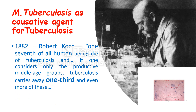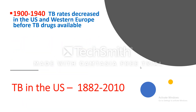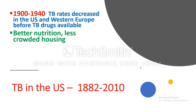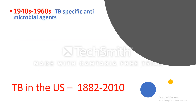In 1882, Robert Koch stated that one-seventh of all human beings die of tuberculosis, and if one considers only the productive middle-age groups, tuberculosis carries away one-third or more. From 1900 to 1940, tuberculosis rates decreased in the US and Western Europe even before TB drugs were available, due to better nutrition, less crowded housing, public health efforts, earlier diagnosis, TB sanitaria, and surgery.